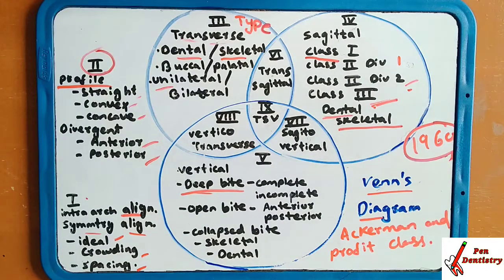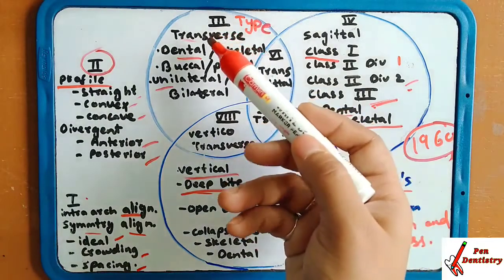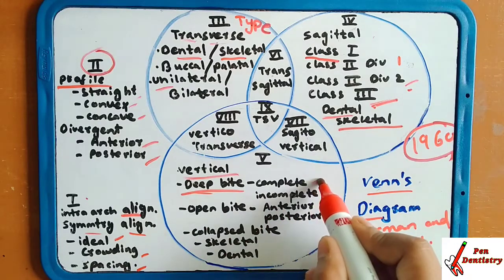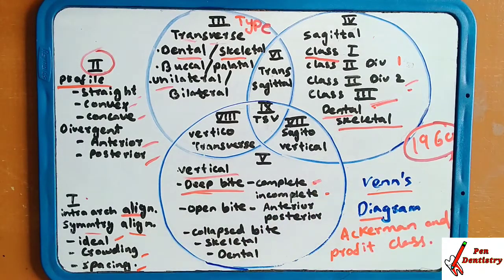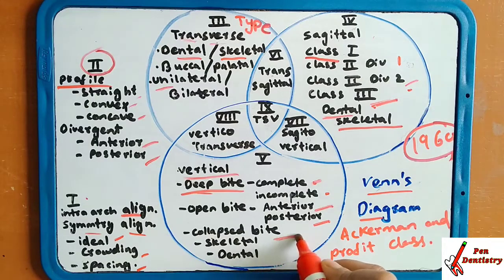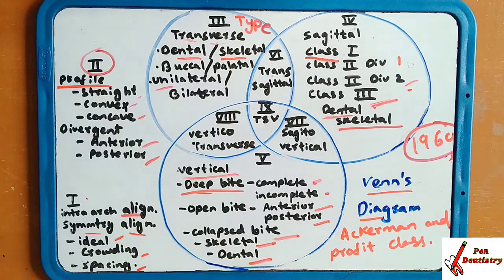In group five, he described the vertical plane. In the vertical plane, he addressed whether the bite is a deep bite — either incomplete or complete — whether there is an anterior open bite or posterior open bite, whether the bite has collapsed, and whether the problem is related to skeletal or dental issues.